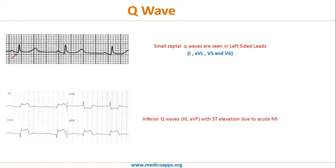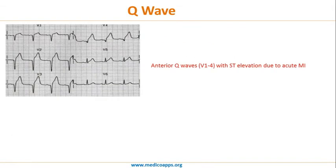In this case, there is a pathological Q wave in lead 3 and AVF, also associated with ST elevation. This is again a case of acute MI. In another case, looking at V1, V2, V3, and V4, large anterior Q waves are seen. This is again a case of pathological Q waves — acute anterior MI.